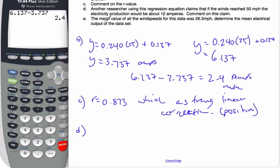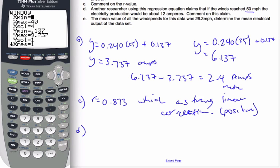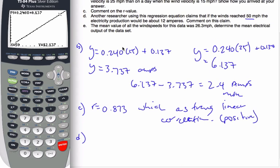Part D says, another researcher using this regression claim that if the wind reaches 50 miles per hour, the electricity production will be 12 amperes. If we use our equation, I'm going to use it, but then we'll talk about what this value means. If I use my equation and I'll trace the value at 50, I can see that it's really close to 12.